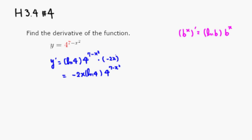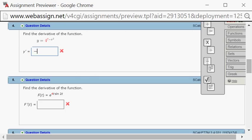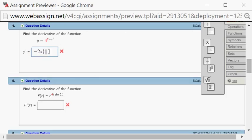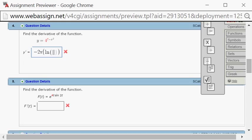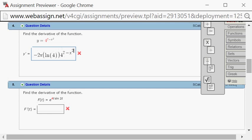So let's write that down. We got negative 2x natural log of 4, and then 4 to the 7 minus x squared.